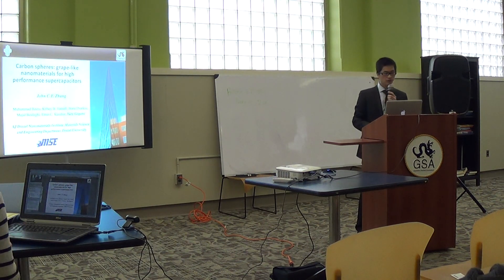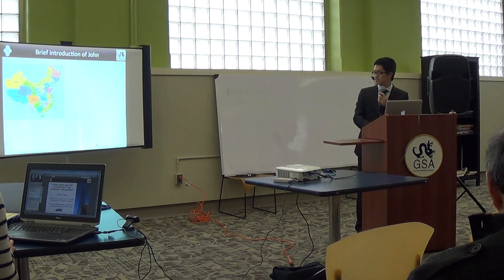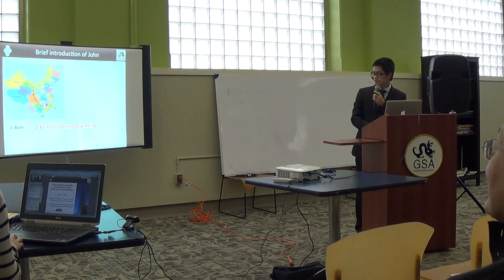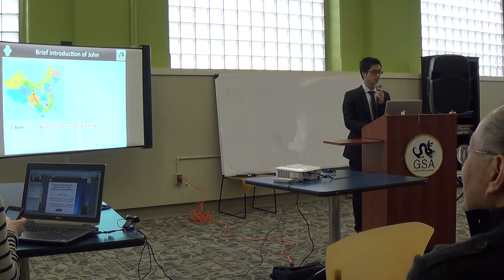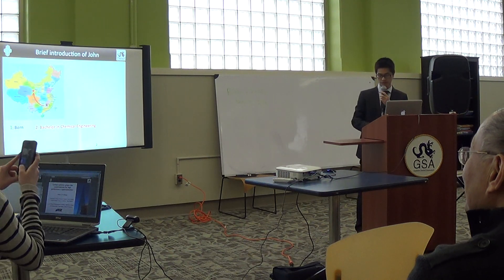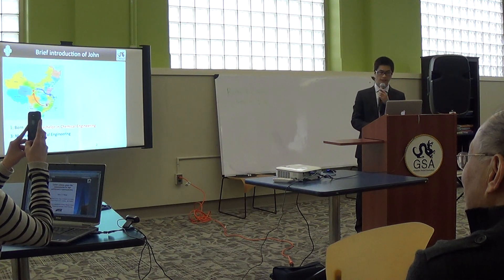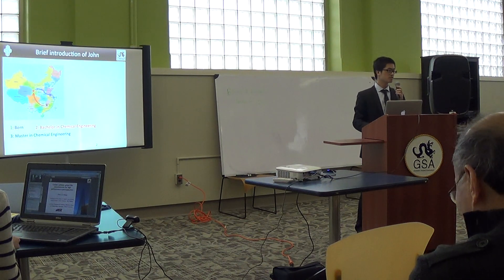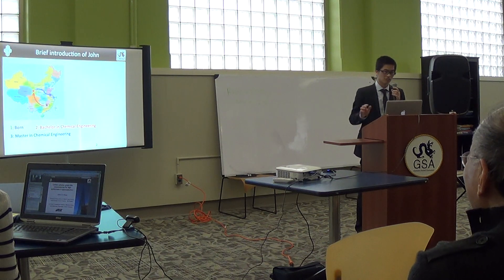I want to briefly introduce my pathway — how I got here. I was born in Jiangxi, a province in south China. I moved to Northwest University for Nationalities, majoring in chemical engineering, then moved back to Shanghai for a master's degree, also in chemical engineering. You might wonder how I can do materials science with a background in chemical engineering. Let me tell you: anything is possible. Don't stop dreaming.